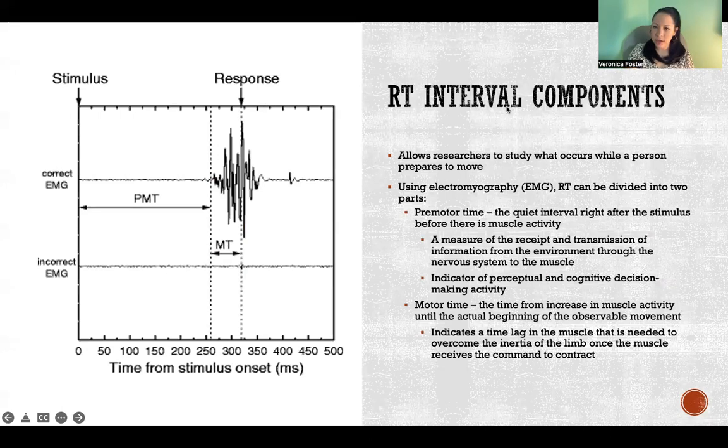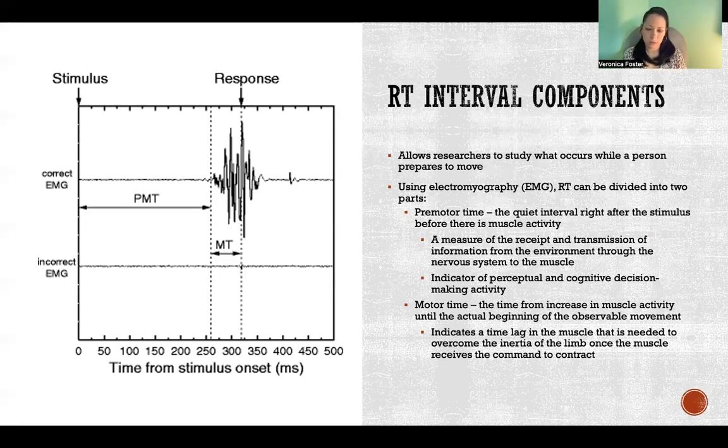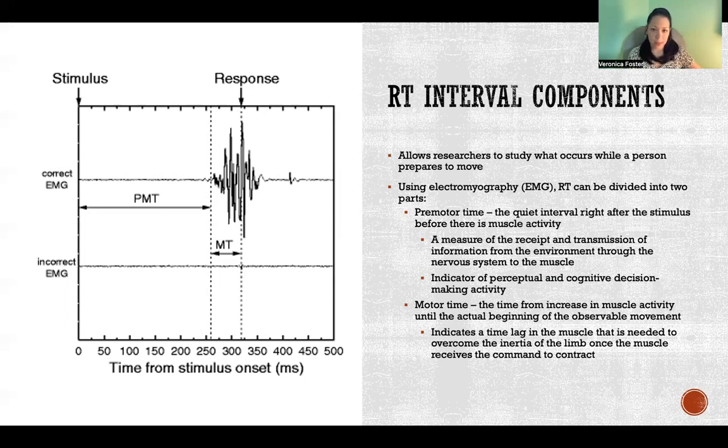So reaction time interval components. So the reaction time itself, we can break down into two parts. Now we can only observe these two parts with the use of EMG. So we need sensors to be able to read the muscle activity that's happening during reaction time, because there's no visible movement, there's no visible change during the reaction time. But if we can track the EMG, we can see what the motor activity is in that muscle.